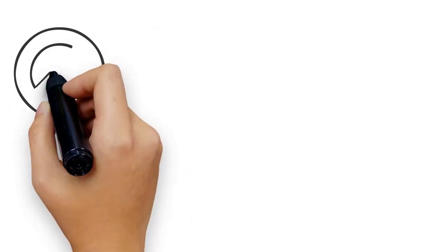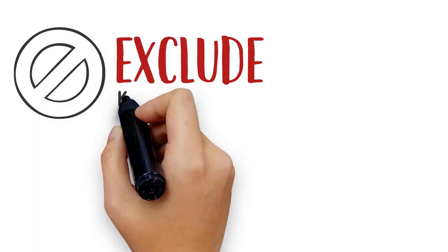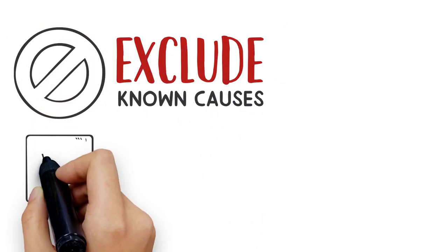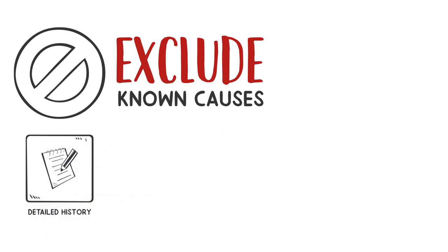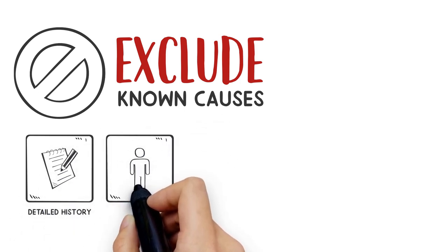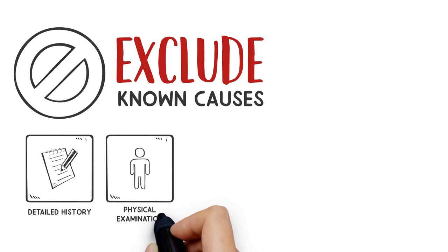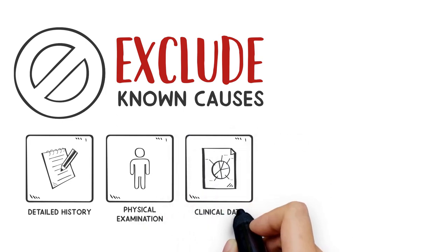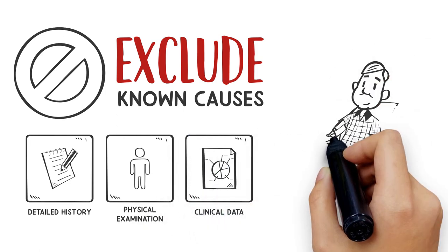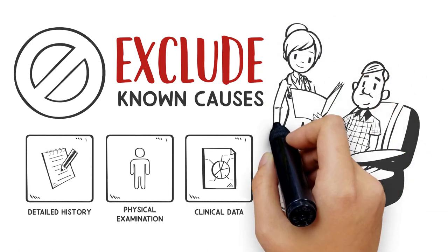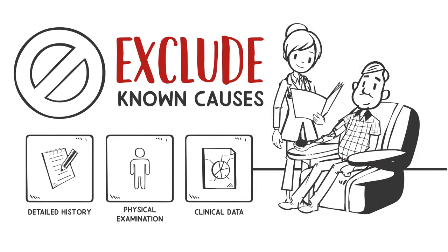The way that we exclude known causes of pulmonary fibrosis is we take a detailed history, we perform a detailed physical examination, and we gather clinical data, including pulmonary physiology and blood tests.